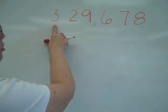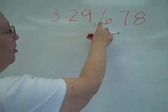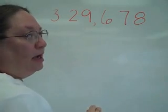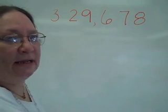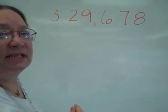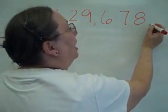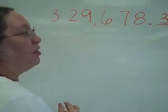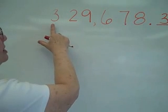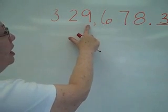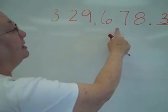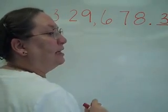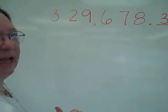Think of the number 329,678. Notice I don't use the word 'and' in there. 'And' is reserved for a decimal point. If I had anything further on this side, say I have a 3 there, I would read this as 329,678 and 3 tenths. But we'll get into that later.